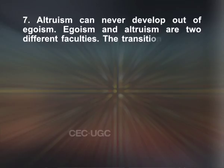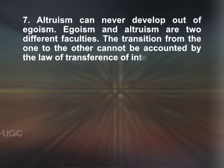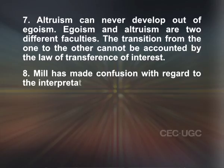Number 7 — Altruism can never develop out of egoism. Egoism and altruism are two different faculties; the transition from the one to the other cannot be accounted for by the law of transference of interest. Number 8 — Mill has made confusion with regard to the interpretation of the word 'desirable.' Sound is audible or an object is visible because we actually hear it or see it, but on this analogy we cannot say that a thing is desirable because we actually desire it. 'Audible' or 'visible' and 'desirable' are not of the same order. Desirable means what we ought to desire, not what is capable of being desired. Therefore, we cannot say that pleasure is desirable because each man naturally seeks his own desire.